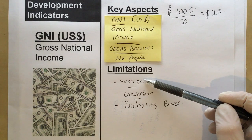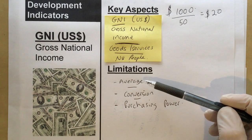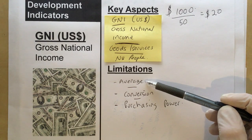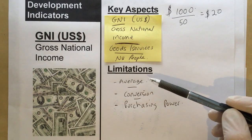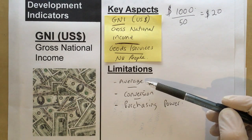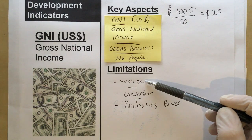One limitation is that it's an average. In some countries there might be a handful of very rich people but also a large number of people on very low incomes. On average, the GNI might look quite good, but it doesn't tell you about the spread of wealth in the country — there might be very rich people alongside people on very low incomes.